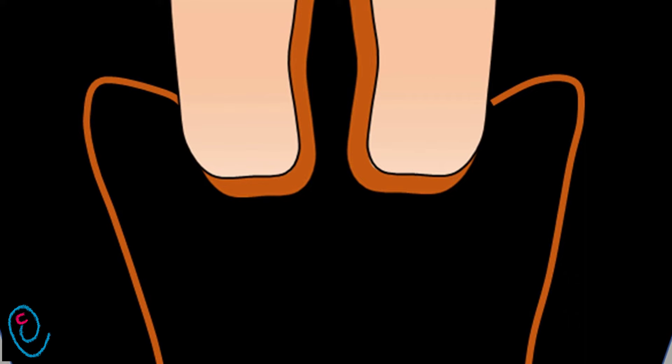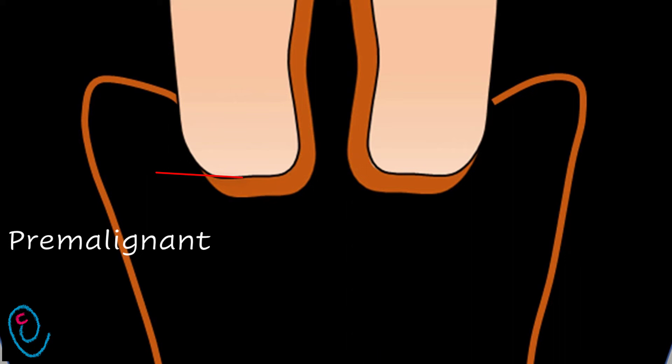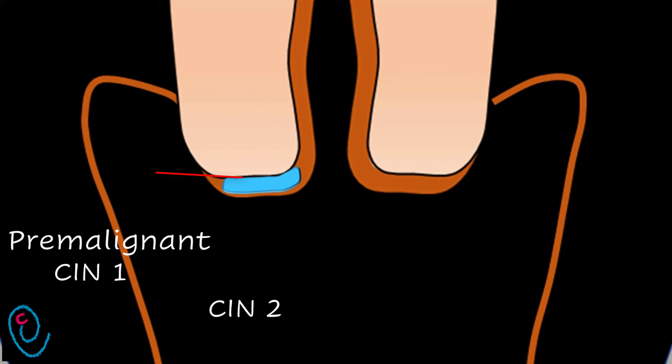Premalignant lesions are non-invading — they affect the epithelium but don't invade the basement membrane. When it involves the basal third of epithelium, it's known as CIN1. When it extends to the basal two thirds, it becomes CIN2. But when the lesion includes the whole thickness of epithelium, it's called CIN3.